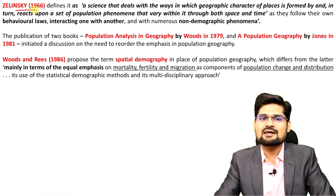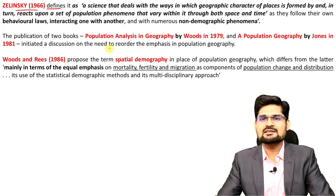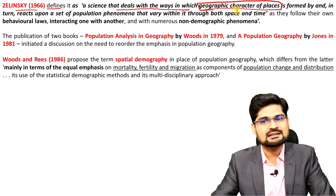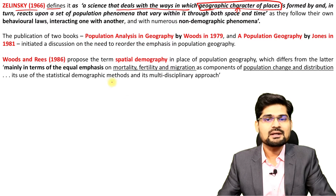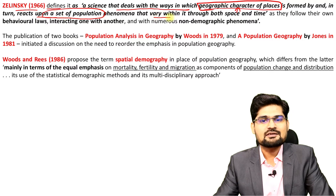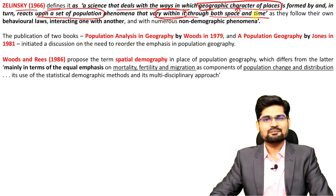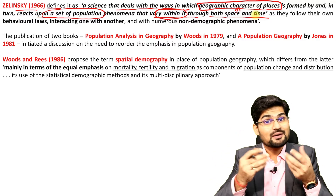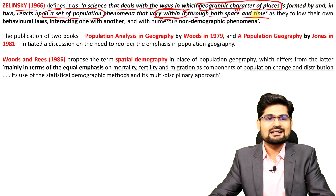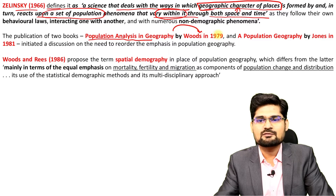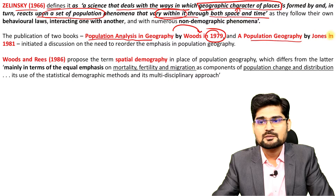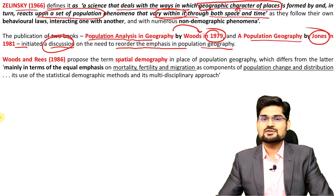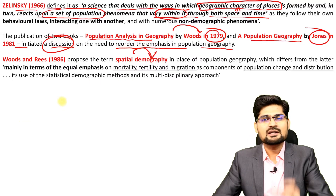There is another scholar called Zelensky — you must have heard about the Zelensky model. Zelensky in 1966 defines population geography very specifically as 'a science that deals with the ways in which the geographic character of places is formed and in turn reacts upon a set of population phenomena that vary within it and both through space and time.' This means population does not just vary or is dynamic in a particular space, but also between spaces — where migration patterns are very important. The publications of 'Population Analysis in Geography' by Woods in 1979 and 'A Population Geography' by Jones in 1981 initiated a discussion on the need to reorder the emphasis in population geography, leading to an emphasis on spatial demography.